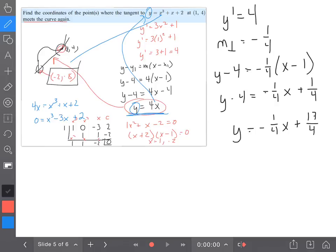How do I show that this does not meet the curve again? Well, I would actually take that and plug it in. So I would go -1/4·x, because these things are both equal to y, so I'm going to substitute there: -1/4·x + 17/4 = x³ + x + 2.